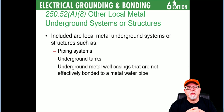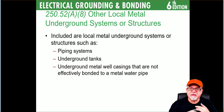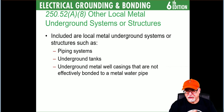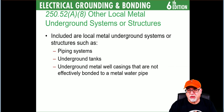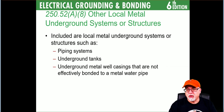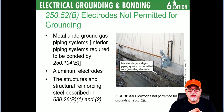250.52(A)(8) — other local metal underground systems or structures. Included are things like existing metal piping systems in contact with the earth, underground tanks, and underground metal well casings not effectively bonded to the metal water pipe. It's all about surface area. I usually don't see a lot of these on new construction sites. Well casings are usually so far away it makes it moot to be part of the grounding electrode system — you'd need to confirm with your jurisdiction what they expect.